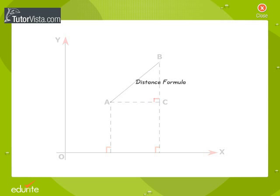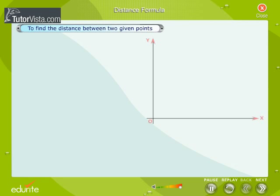Distance Formula. To find the distance between two given points, let the two given points be A(x1, y1) and B(x2, y2).